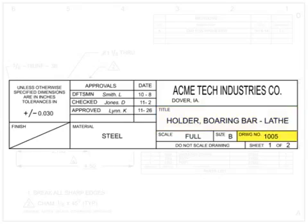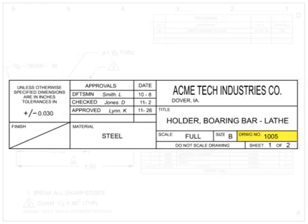The drawing number gives the drawing a unique identifier as a stand-alone document. Older drawings sometimes use the part number as the drawing number, which is considered bad practice in modern drawing standards. In modern standards, document numbers such as drawing numbers should remain separate from part-identifying numbers to simplify and separate both the document change and part change processes. However, drawing numbers can be incorporated into part-number sequences by simply adding an extra digit to the end of the drawing number.